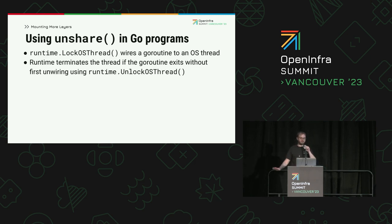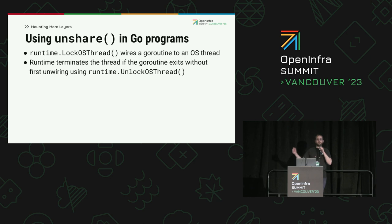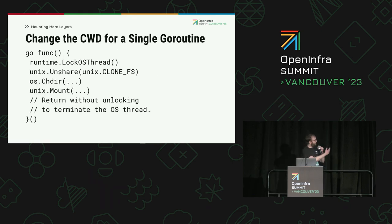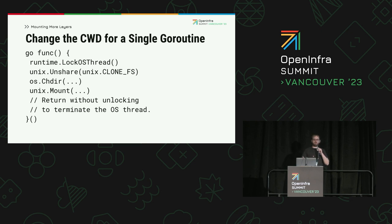Thankfully, Go has a solution for this. runtime.LockOSThread wires the calling goroutine to its current thread until an equal number of calls are made to UnlockOSThread. The calling goroutine will always execute on that thread exclusively. Since unsharing a thread's file system information is irreversible, no other goroutine can ever be allowed to be scheduled onto that unshared thread. Thankfully, Go also has a solution for this: simply return from the goroutine function without unlocking it from the thread, and the runtime will terminate the thread and eventually spawn a new one to replace it. This is roughly what changing the working directory to mount looks like: spawn a new goroutine, lock it to a thread, unshare the file system information, change the working directory, mount, and return.